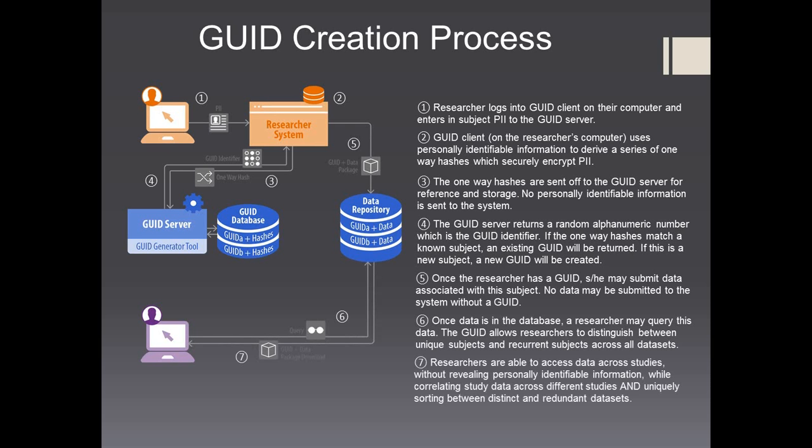Finally, researchers are able to access data across studies without revealing personally identifiable information, while correlating study data across different studies and uniquely sorting between distinct and redundant datasets.